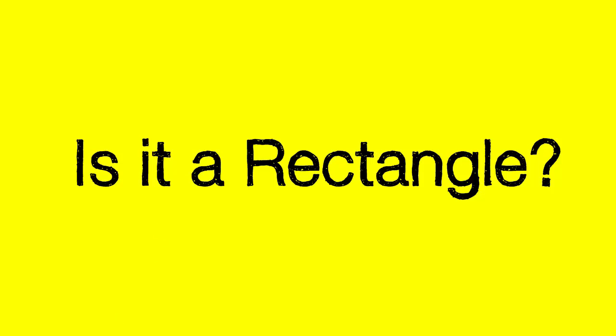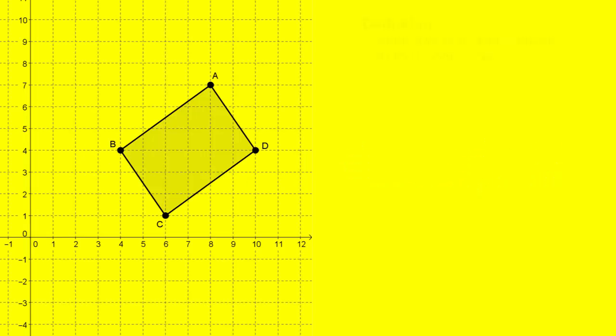So here we have a problem where it's asking us, is it a rectangle? And here's what it looks like. I have what looks like a rectangle, with vertices A, B, C, D. So it looks like a rectangle.